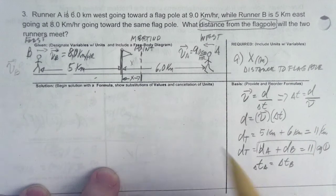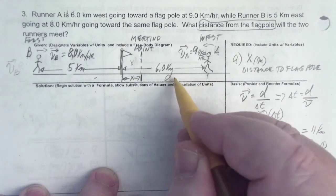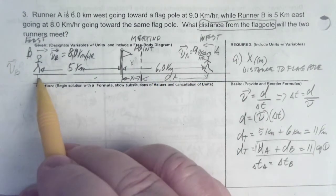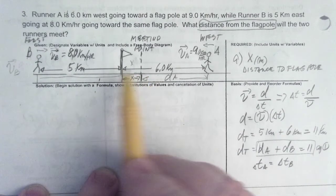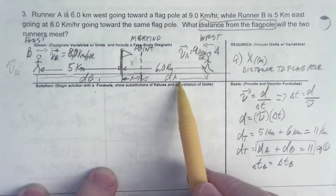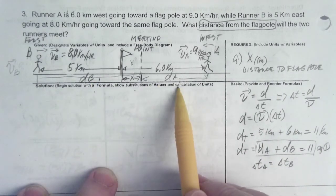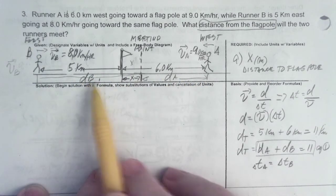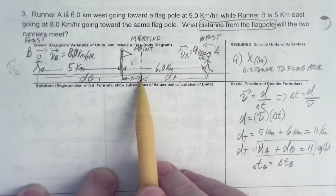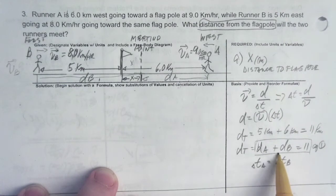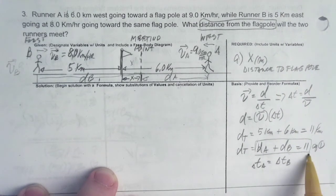Now, this part from here to there, this is going to be distance A. We don't know how much that is. And then from here all the way to there, that's going to be distance B. Now, we also know that distance A plus distance B is equal to the total distance, which is 11. Because this whole thing is 11. This plus that is 11 because they'll meet over here. We just don't know where that is. And so I have that written here also. DA plus DB is equal to 11.